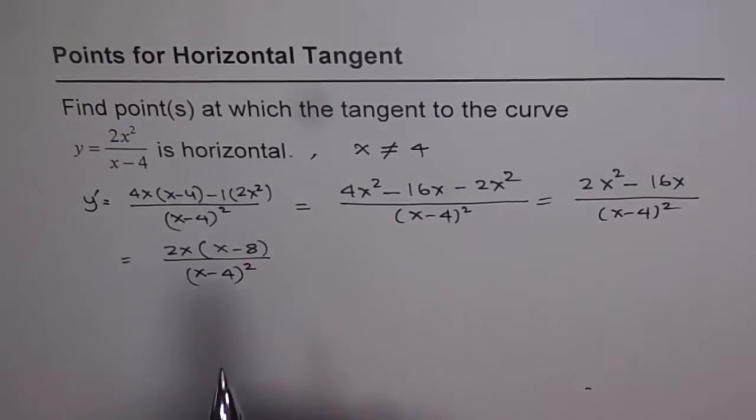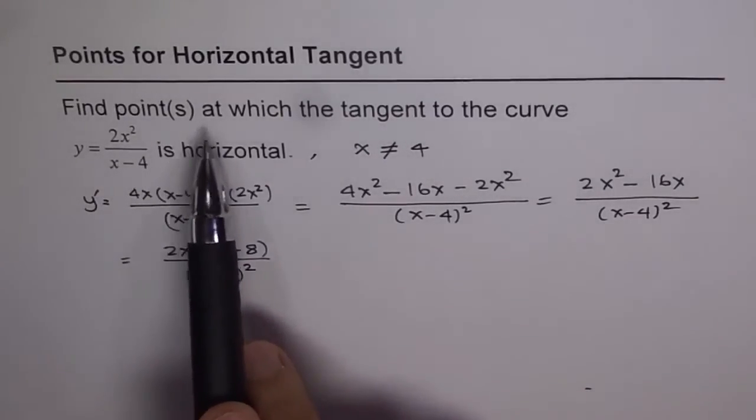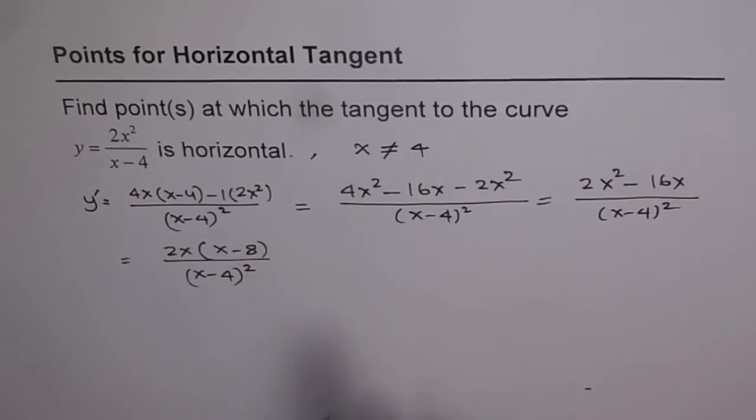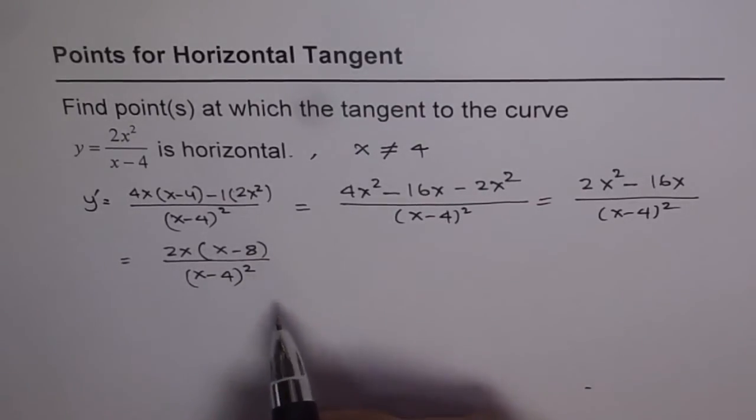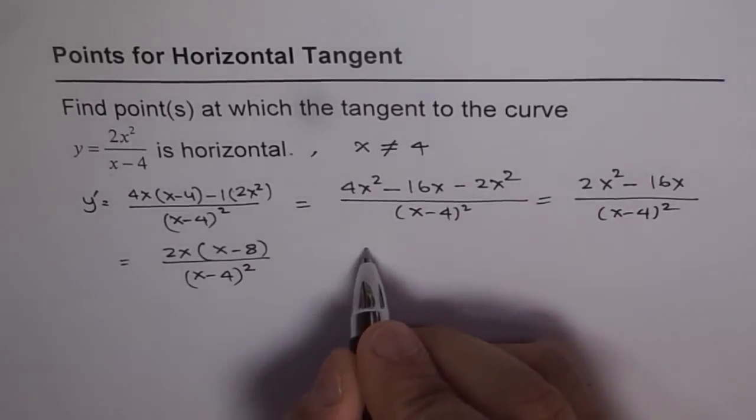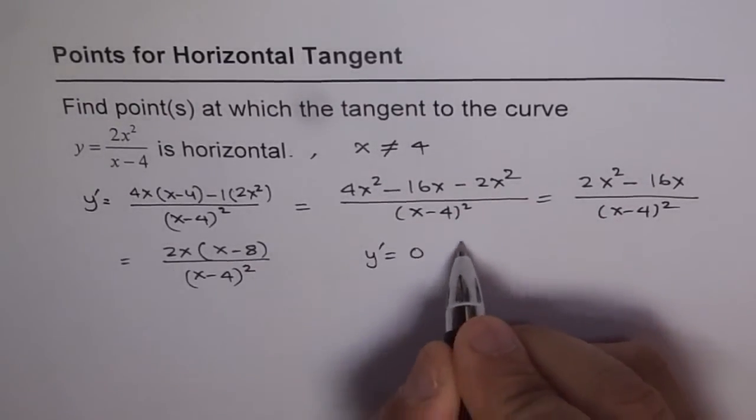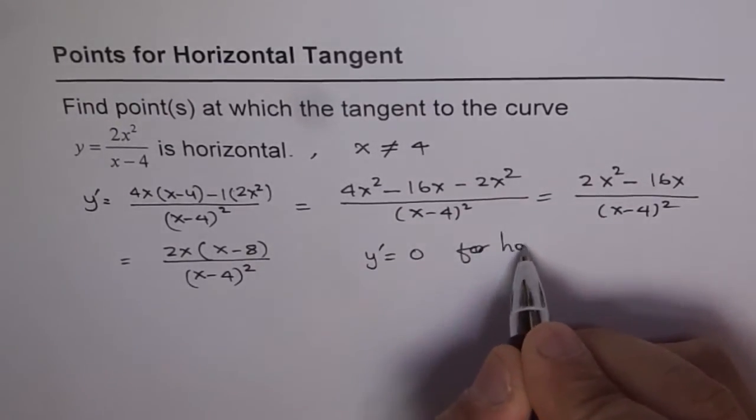Now, the question says, find the points at which tangent to this curve is horizontal. So the tangent is horizontal when y dash is 0. So y dash should be equal to 0 for horizontal tangent.